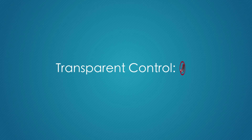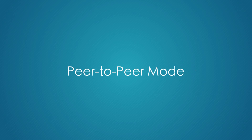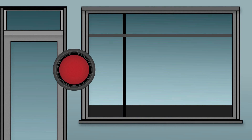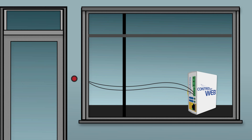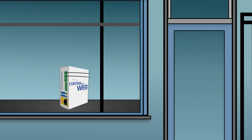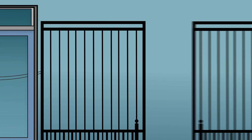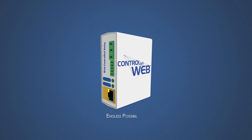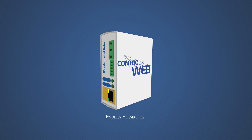For transparent control without using a computer, you can use our products in a peer-to-peer mode. For example, you can connect a push-button switch to a web relay in one building and configure it to control another web relay in a completely separate building. These products have endless possibilities that are only limited by your imagination.